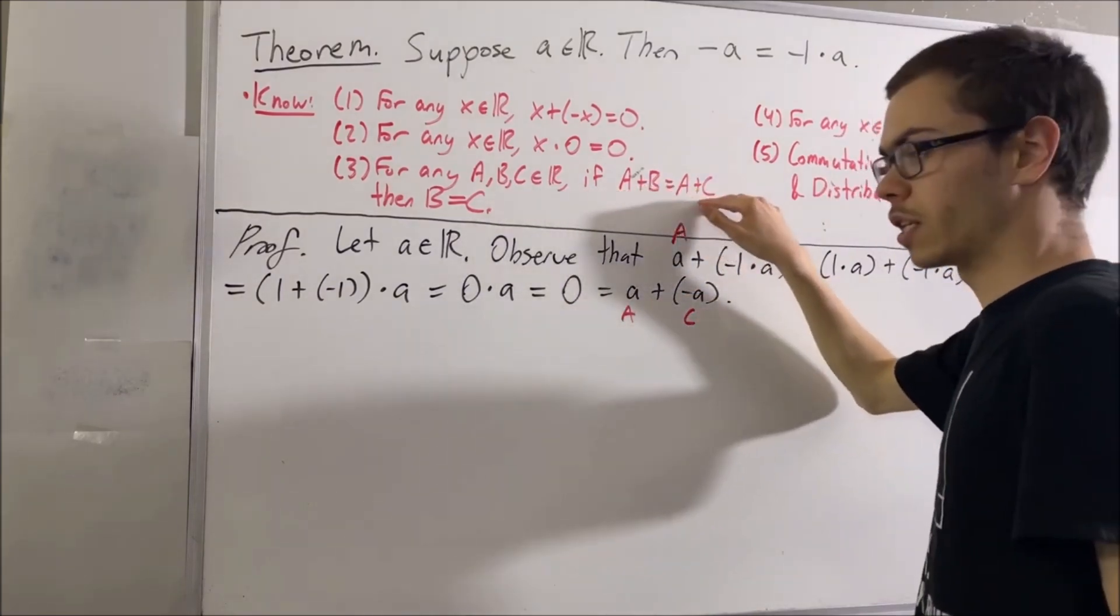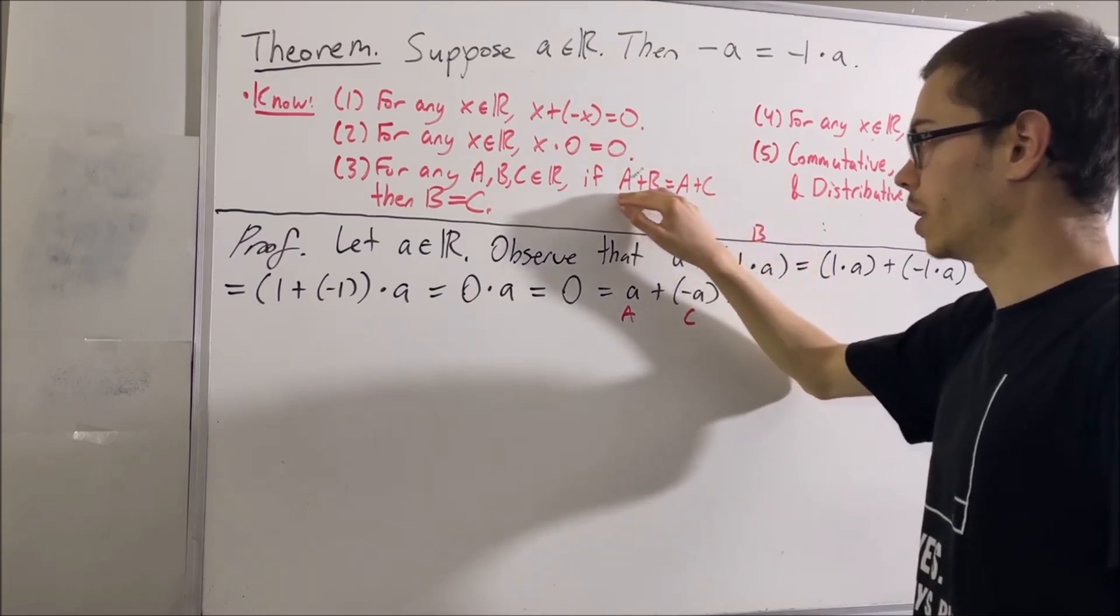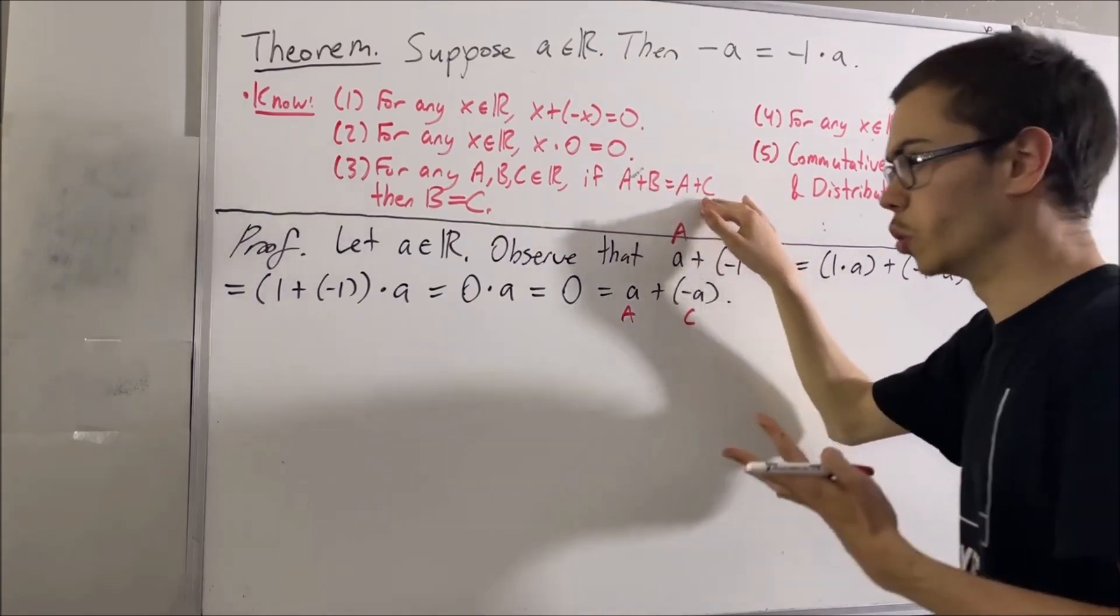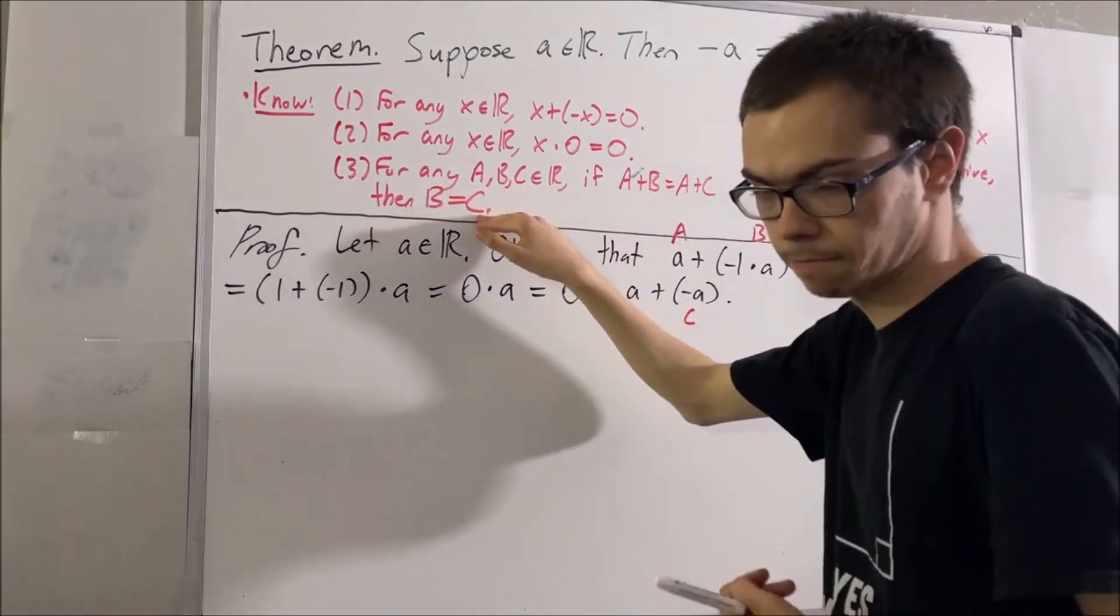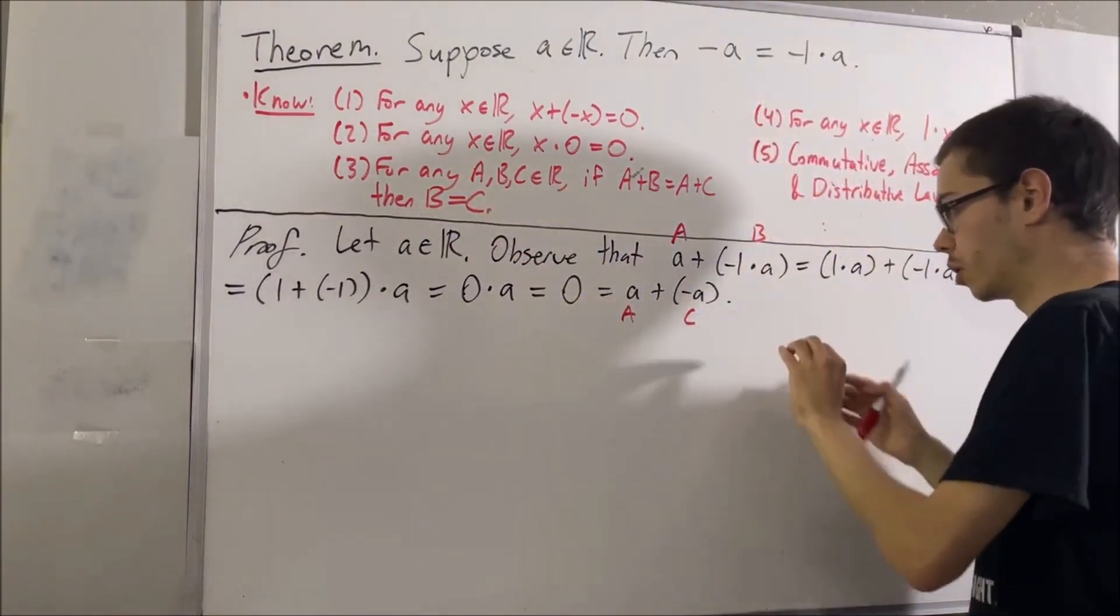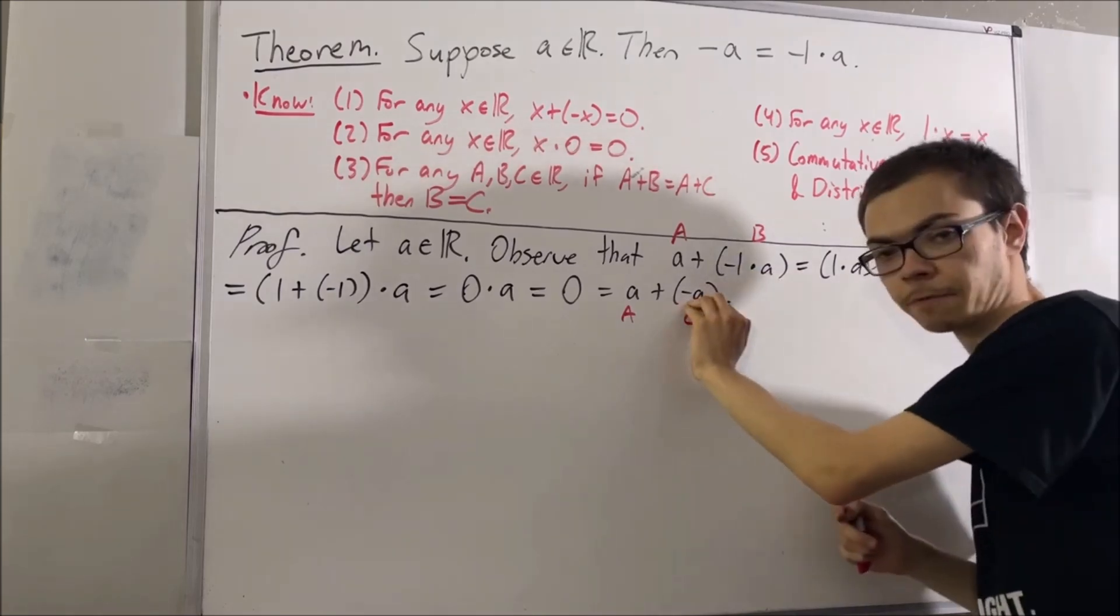We see that A plus B is equal to A plus C. Exactly the form that we want. So, because we have something in this form, we are able to conclude that B is equal to C. In other words, we're allowed to conclude that negative 1 times A is equal to the negative of A.